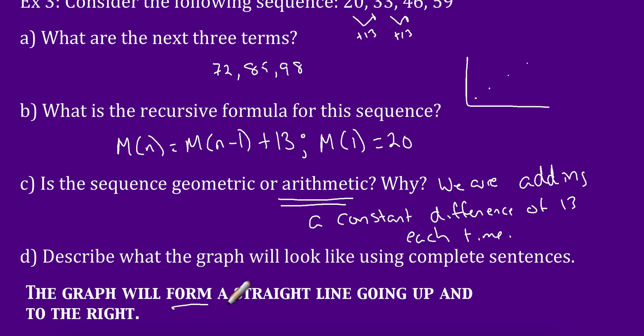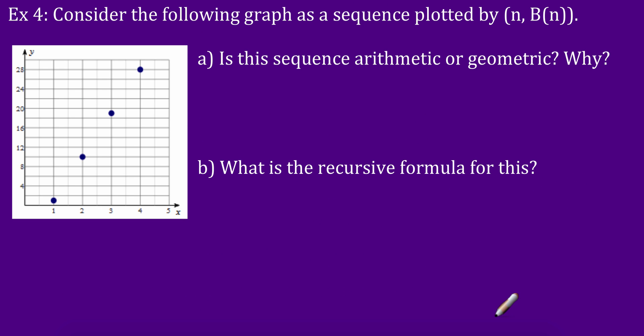And what's that graph going to look like? That graph is going to form a straight line going up and to the right. How would we know it went down? How would it look like this if it went down? Well, if it went down, our numbers would have to go down, right? 10, 8, 6, 4. I'd be subtracting.